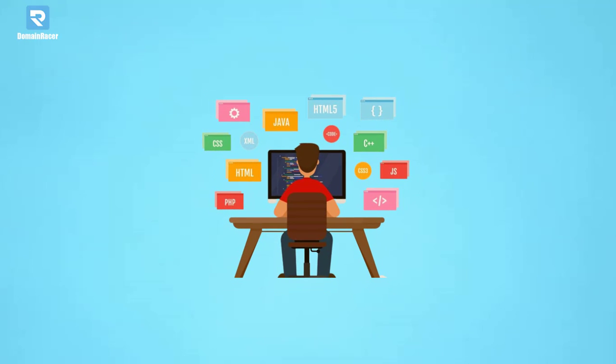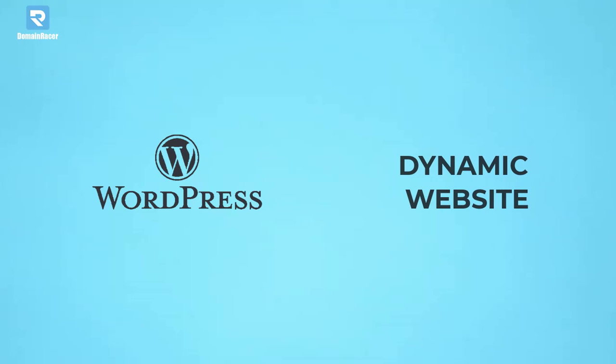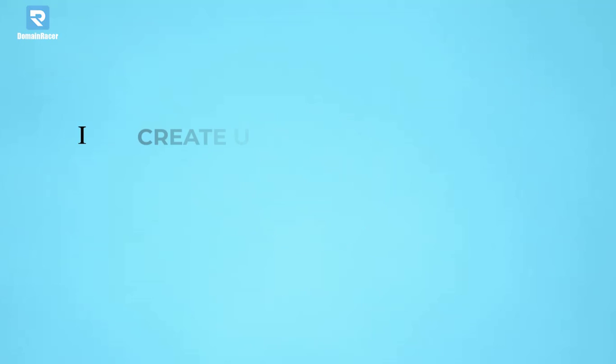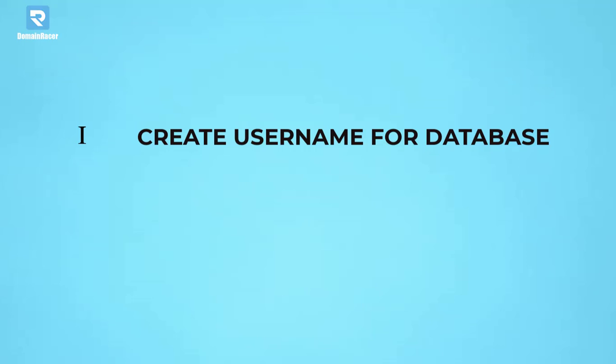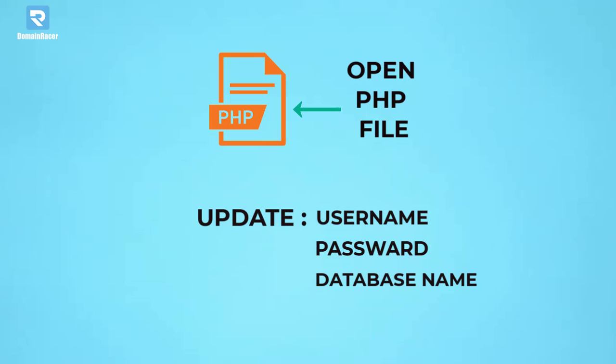We have completed the second part. Now we are moving to the third part, which is the most critical. Here we are working with MySQL databases, because WordPress and other dynamic applications are attached to a database. Stage three has three steps: first, restore the database; second, create a username for the database, attach it, and grant privileges; third, update the newly created username, password, and database name in the PHP configuration file.